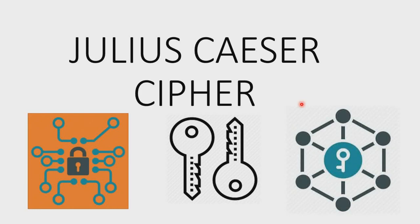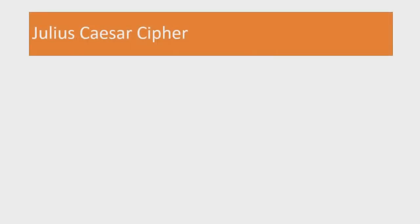Hello everyone and welcome to Cryptography Home. In this video I will be introducing the Julius Caesar cipher as well as explaining how it operates. The Julius Caesar cipher is an example of a historical algorithm that was used by Caesar and his colleagues in order to send messages secretly. I'll be explaining how the algorithm works as well as other mathematical concepts that are associated with the algorithm.